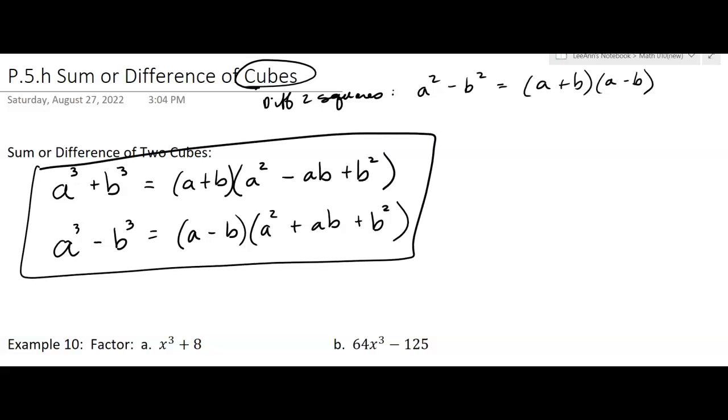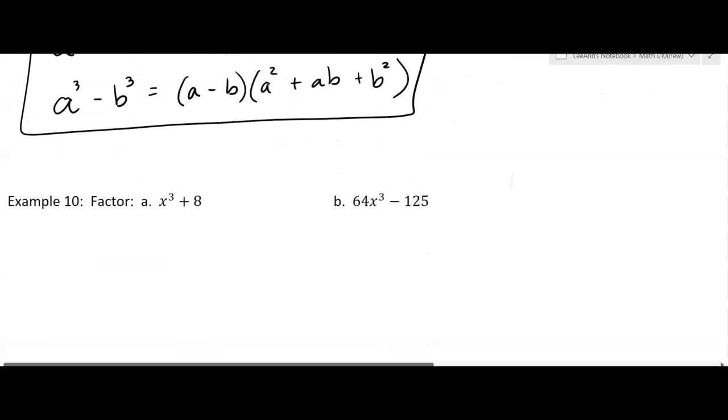Those are the two formulas. You can put that on your page of notes for an exam. One of them is called the sum of two cubes and the other is the difference of two cubes. There's no sum of squares though, it's always difference of two squares.